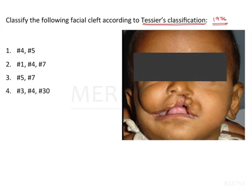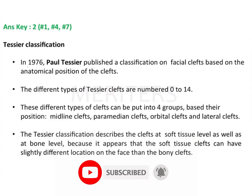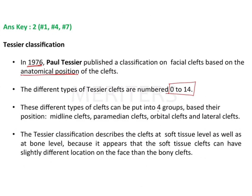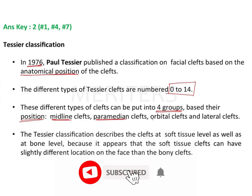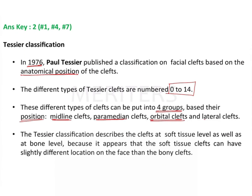Before looking into the options or the given image, we should first have knowledge about Tessier's classification. In 1976, Paul Tessier gave a classification based upon the anatomical position of the cleft, numbering the different types from 0 to 14. These types are further categorized into four groups based on position: midline clefts involving the median structures, paramedian clefts involving structures adjacent to the midline, orbital clefts involving the orbit, and lateral clefts running horizontally in the face.